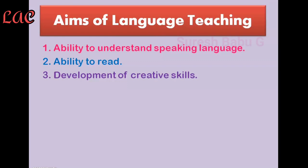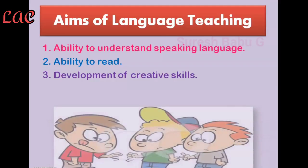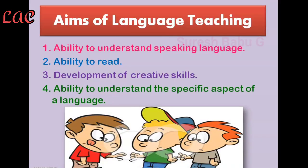The second aim is the ability to read. In order to develop reading, we have to teach the development of creative thinking and creative skills. In order to develop creative skills, we have to teach language properly. Another aim is the ability to understand the specific aspects of a language, and in order to understand those specific aspects you have to teach it properly.